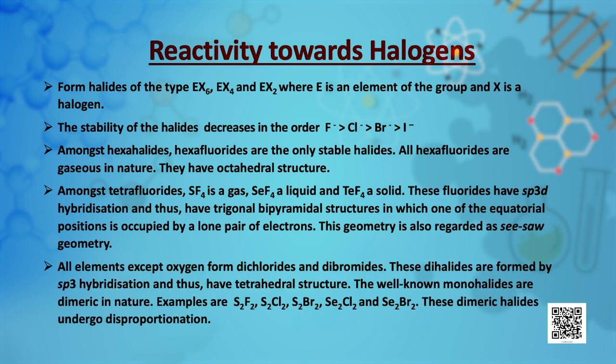All elements except oxygen form dichlorides and dibromides. These dihalides are formed by sp3 hybridization and have tetrahedral structures. The well-known monohalides are dimeric in nature; examples include disulphur difluoride, disulphur dichloride, disulphur dibromide, diselenium dichloride and diselenium dibromide.